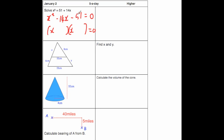So for minus 51, let's go for minus 17 and plus 3. Let's just check: minus 17 times 3 is minus 51, and minus 17 plus 3 is minus 14. So the two solutions: each bracket could equal 0, meaning x equals 17 or x equals minus 3. Those are our two solutions.